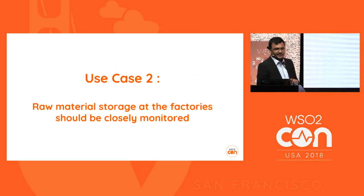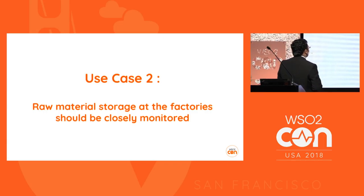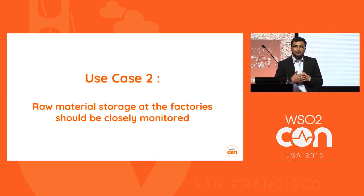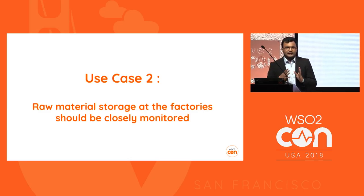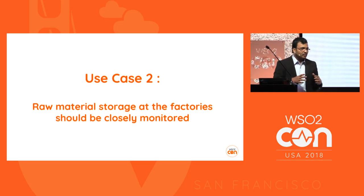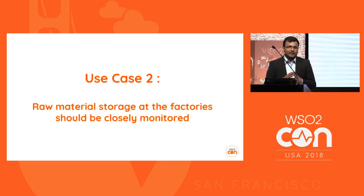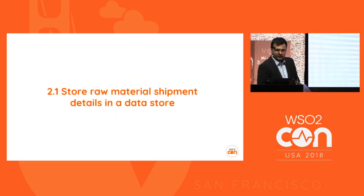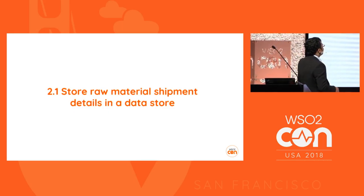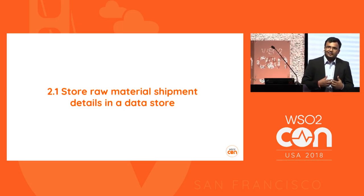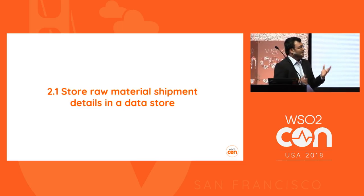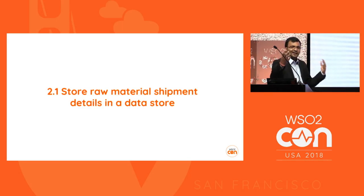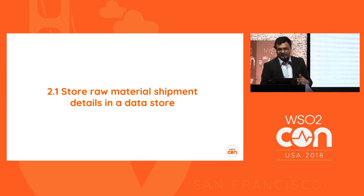The second use case is: raw material storage at the factory should be closely monitored. For consistent production without supply problems, we need to monitor storage and keep track of stocks. The first phase is to store raw material shipment details in a data store - whatever raw material we receive needs to be stored so we can track whether it's been used.